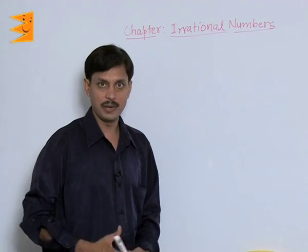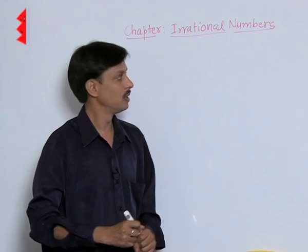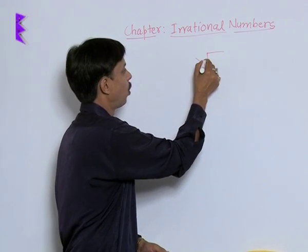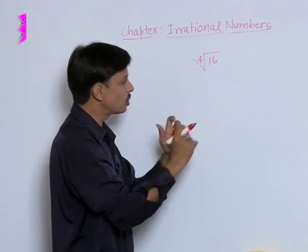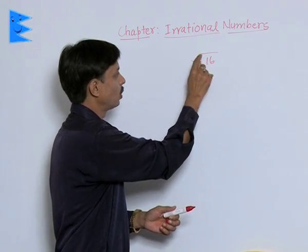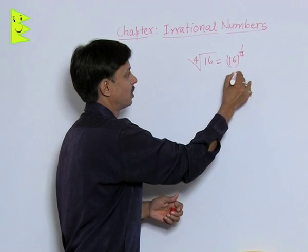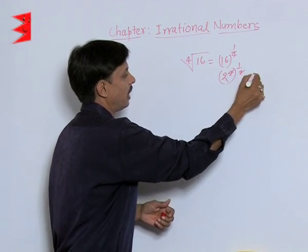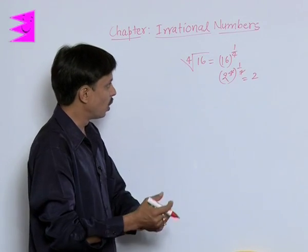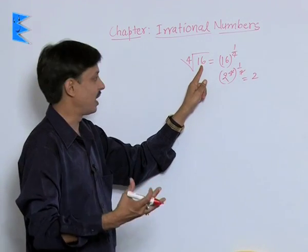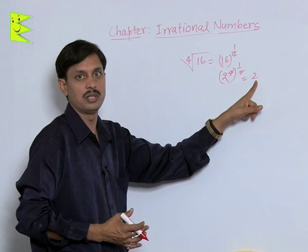I am taking an example where I need to check whether this expression is a surd or not. Suppose I write the fourth root of 16 — is it a surd or not? The answer seems to be not a surd. This is because the fourth root of 16 can be written as 16 to the power 1/4, and 16 can be written as 2 to the power 4, raised to the power 1/4. The net result is a natural number — a rational number. So this is not a surd. Though its radicand is rational and the order is more than 2, the final answer is a rational number. Hence, it is not a surd.